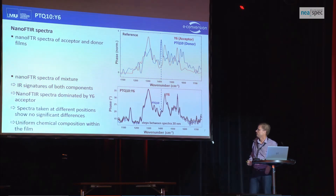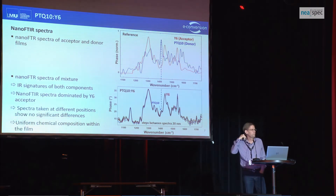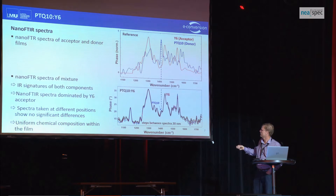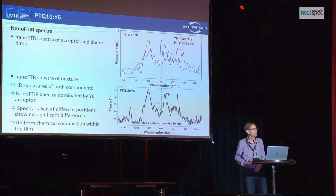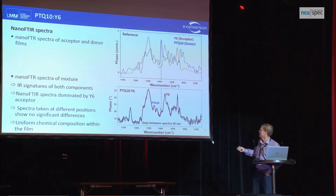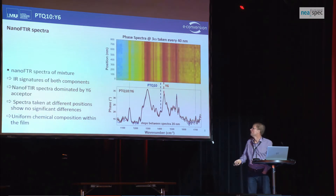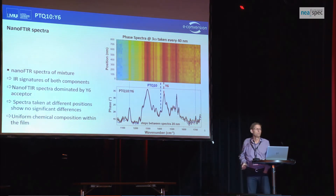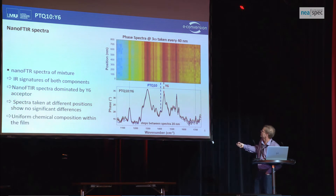That also makes it difficult to distinguish the individual contributions. What you see here are consecutively recorded nano FTIR spectra in spatial steps of 20 nanometers, already showing that there are not really large — if any — spatial variations. You can also see a line scan over 800 nanometers. Here you have the contribution of the Y6, for instance, which dominates.